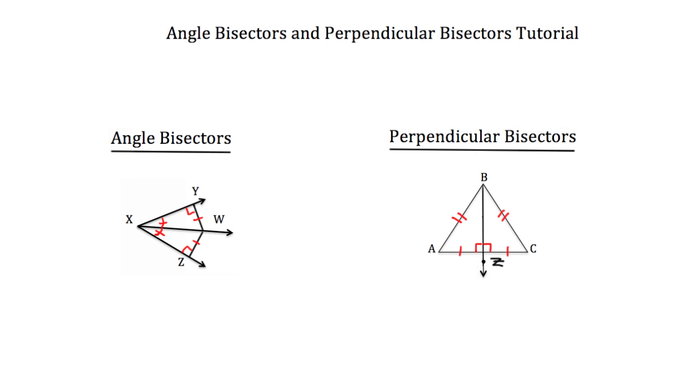For example, any point along the bisector itself is going to be equidistant from the outside points. So if I were to pick this point right here, it would actually be the same distance to point A as it would be to point C. The same thing if I drew a point right here would be the same distance to both A and C, or even a point up here. It doesn't matter, so long as it's somewhere on the perpendicular bisector, it's going to be equidistant from point A and C.